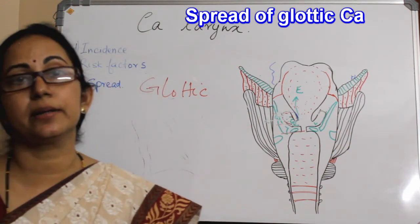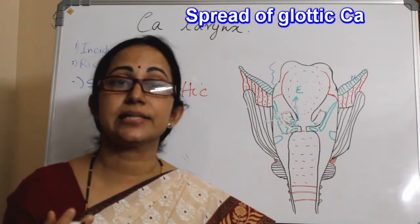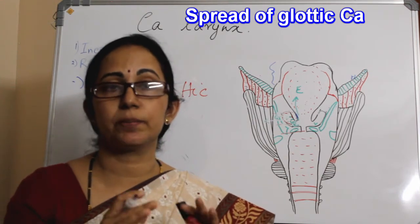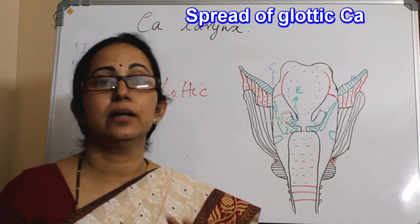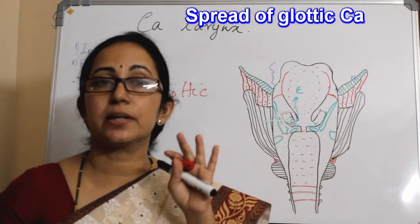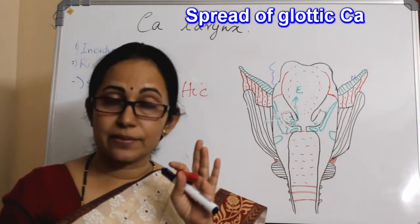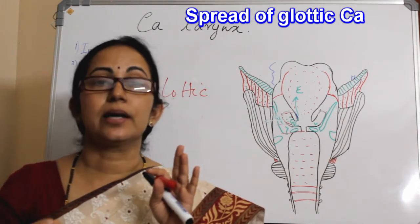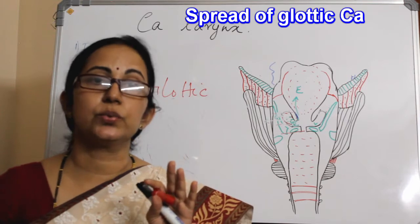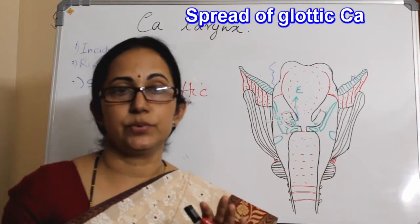They include mild atypia, moderate atypia, and severe atypia. So keratosis with mild atypia, keratosis with moderate atypia, keratosis with severe atypia, then carcinoma in situ, and then invasive tumors.